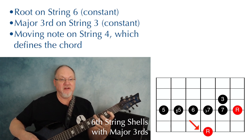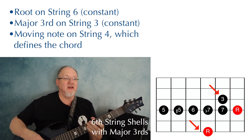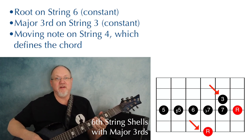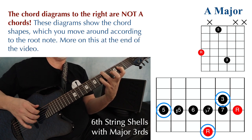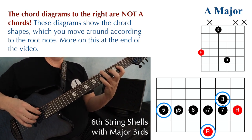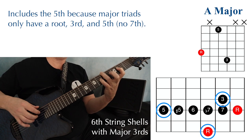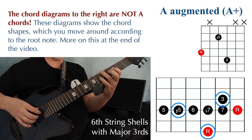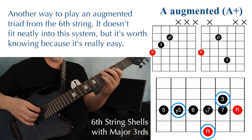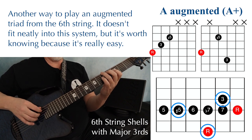Now we have a root on the sixth string, a major third on the third string, and some other note on the fourth string. The root and the third stay the same; we move that other note to change the chord. Playing root-five-three gives an A major chord, with the root on the A string at fret five — a major triad with root, three, and five, no seventh. Changing that note to a sharp five gives an augmented triad. Here's another way to play an augmented triad — it doesn't fit neatly into the system, but it's very easy to play and is the shape used most often.